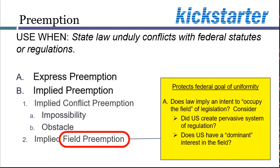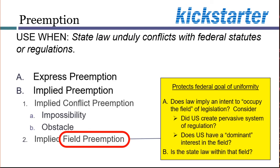So overall, the statute in Hillman is too narrow to be something that impliedly occupies an entire field. Because the law doesn't occupy a field, we don't have to go on to the second question of asking whether the state law is actually in that field or not. Overall, this is a case where Congress's aims will be protected through the narrower doctrine of obstacle preemption, and not the sweeping doctrine of field preemption.